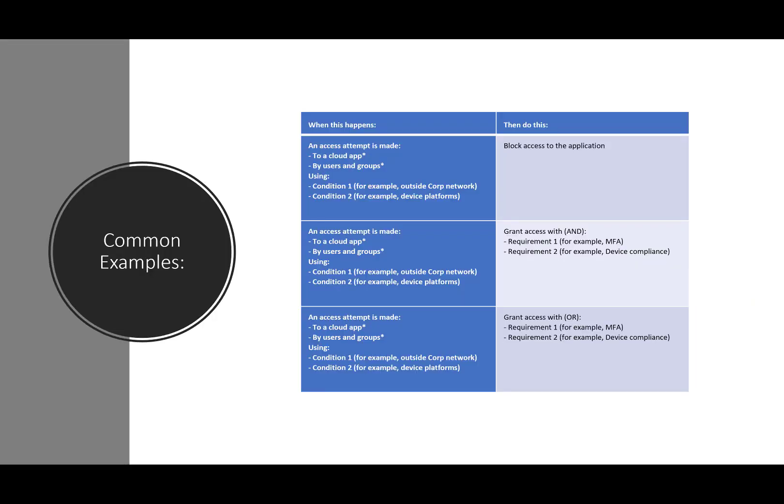Conditional access works by assessing conditions around where users are and then applying access controls. It's essentially an if-then statement: if these conditions are met, then you have to do this, and we're granting or blocking access. A common scenario: if you're accessing certain cloud applications and you're outside the corporate network, then we block access.